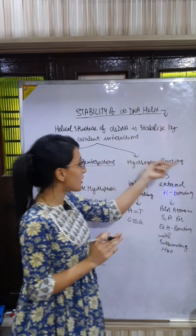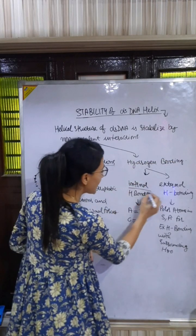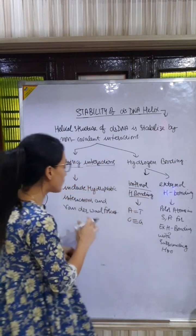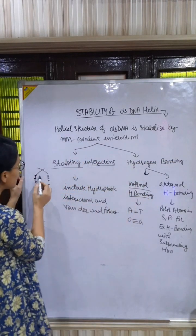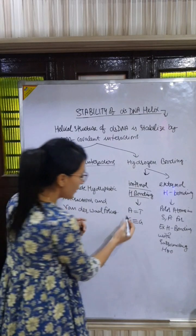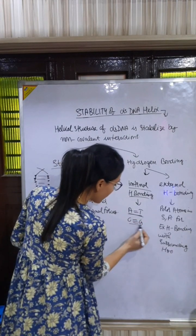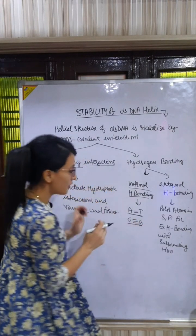Second are the hydrogen bonding. There are two types of hydrogen bonding. First is the internal hydrogen bonding, which is present between the base pairs — for example, adenine-thymine and guanine-cytosine.